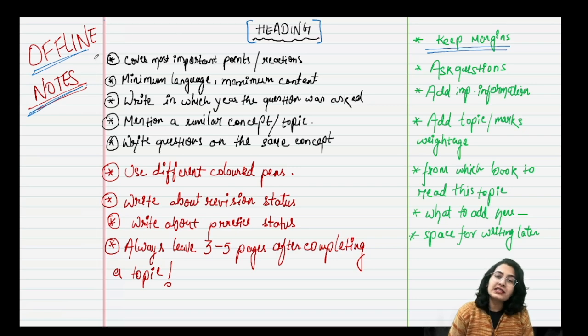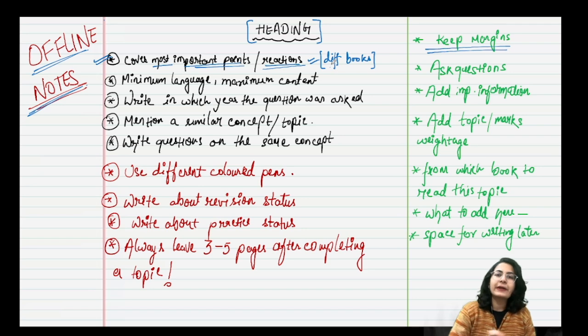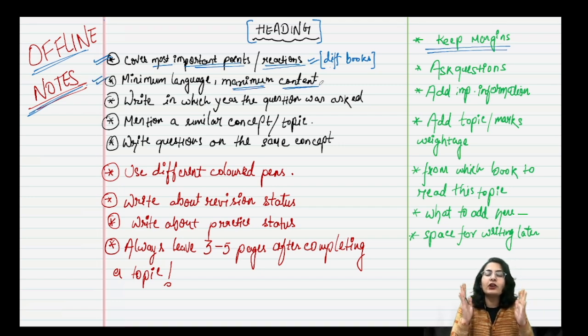You have to stick to the most important points or reactions on that particular topic from different books. From different books you are just going to cover mostly reactions or equations, but you have to only cover that and very little language. Minimum language and maximum content. This should be your motto while making notes. Don't write a lot of language because then it will become boring. Only minimum language, one or two points, and then move onward. Language is also important otherwise you won't know what is happening. So minimum language, maximum content. This should be your motto while making notes.